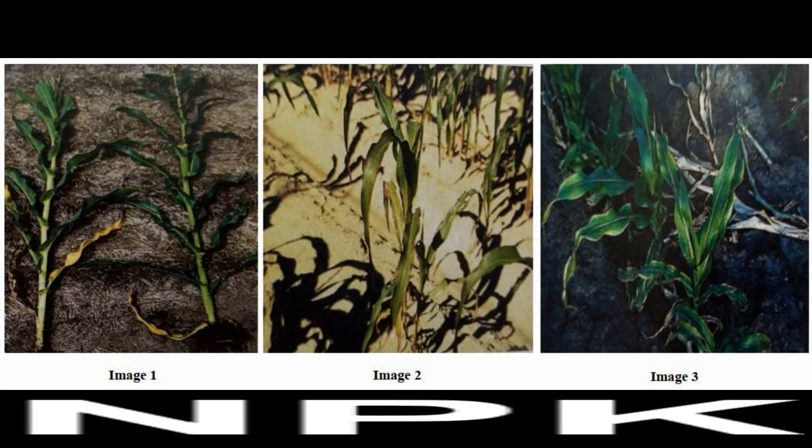The focus will be put separately on each element for better understanding of how element deficiency, i.e. nutrient deficiency, affects plant growth and development. Corn was selected for our discussion simply due to its importance in food security in many regions around the world. Maize is likely to be grown in almost all countries, therefore it deserves great attention when it comes to soil fertility, fertilizer use, and plant nutrition.